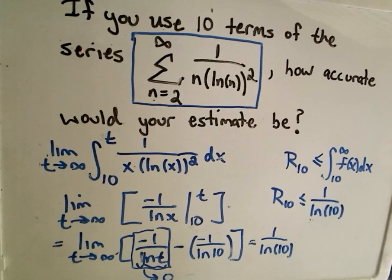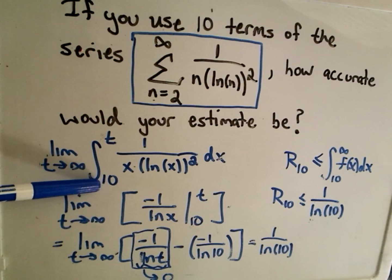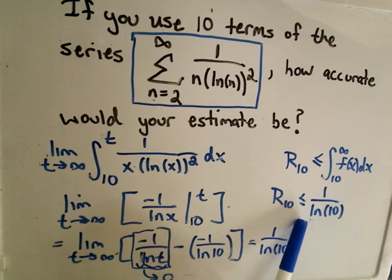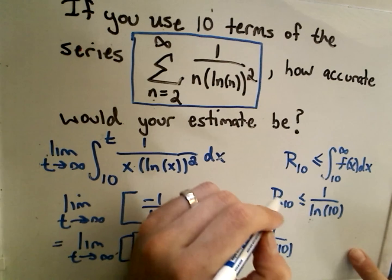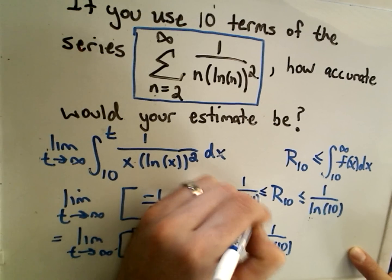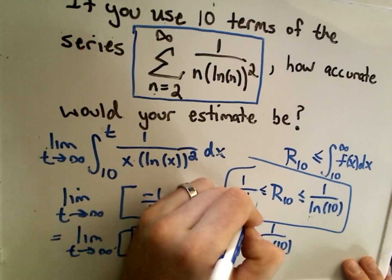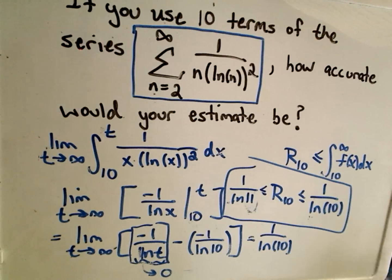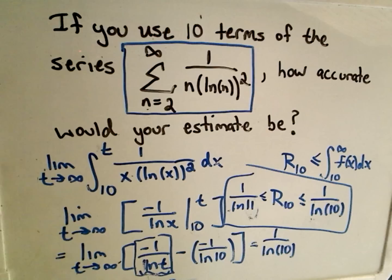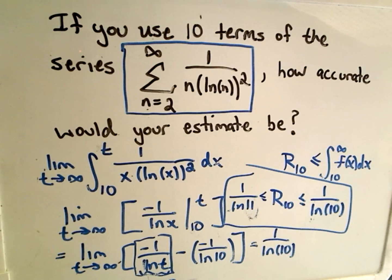That's the basic idea for one use of the integral test estimation. In the process of showing convergence, the only thing that changes is the lower limit of integration when finding an upper estimate for your error. Equivalently, using the other formula, you would get 1 over the natural logarithm of 11 as your lower estimate. You need solid integration techniques since series you encounter may require a variety of methods. Good luck — I hope this helps!